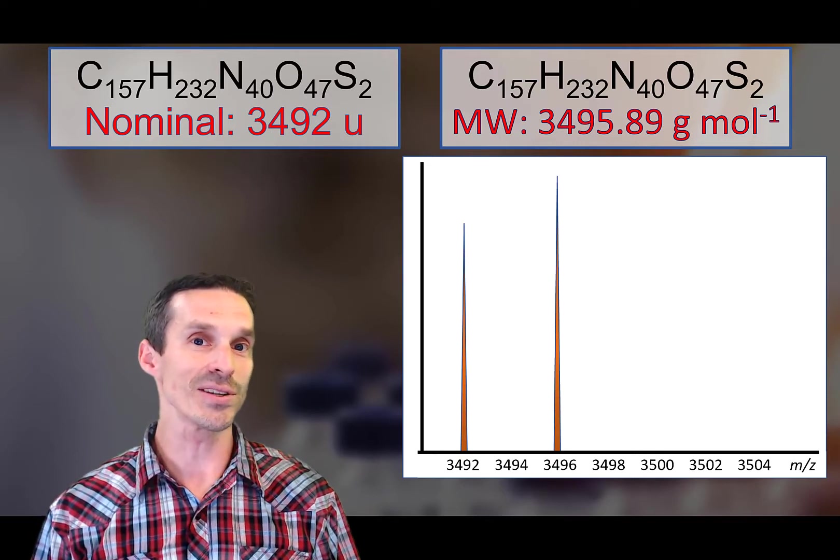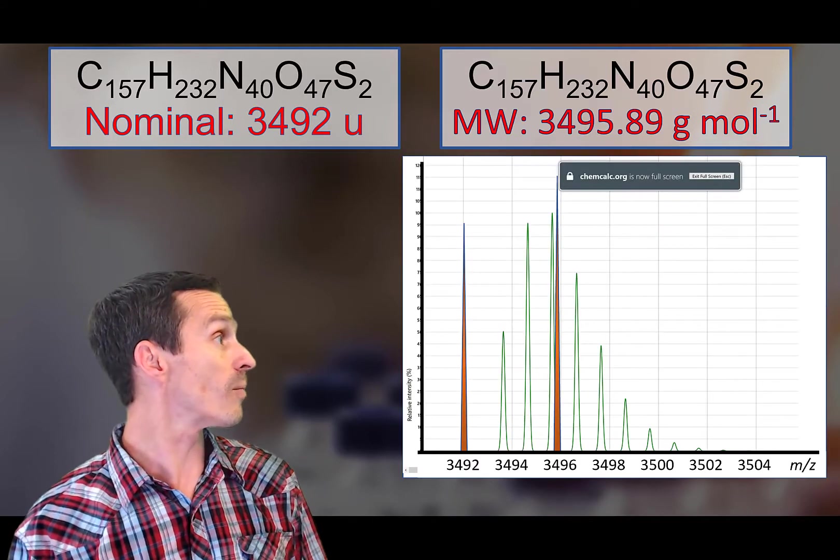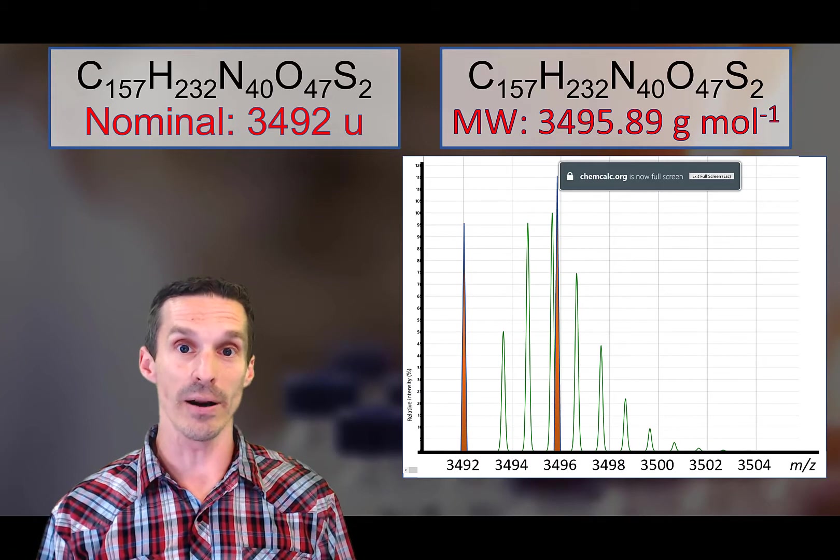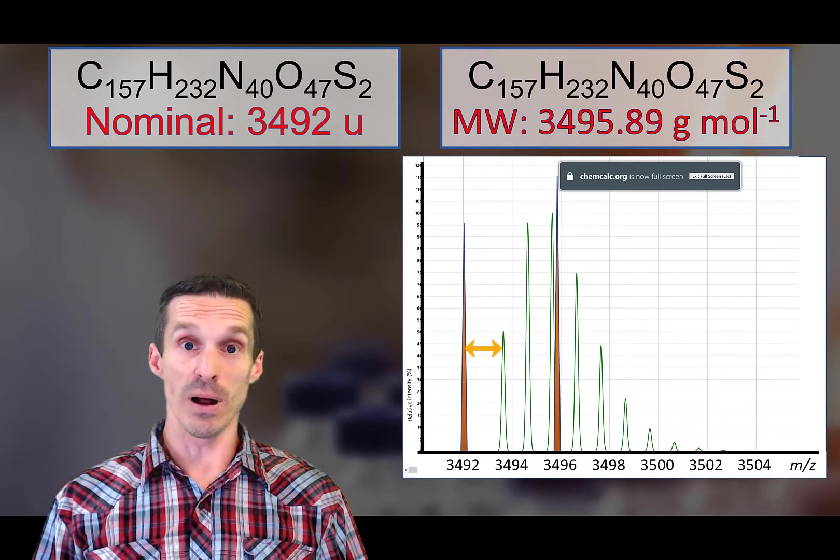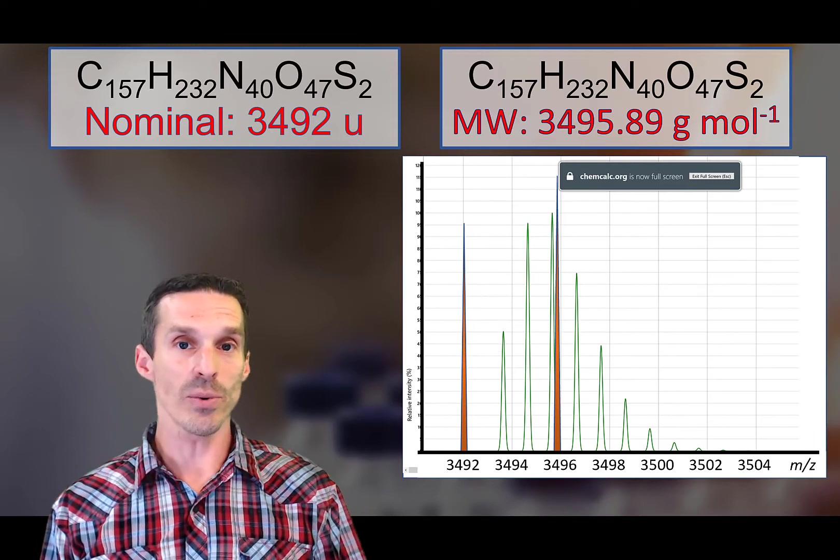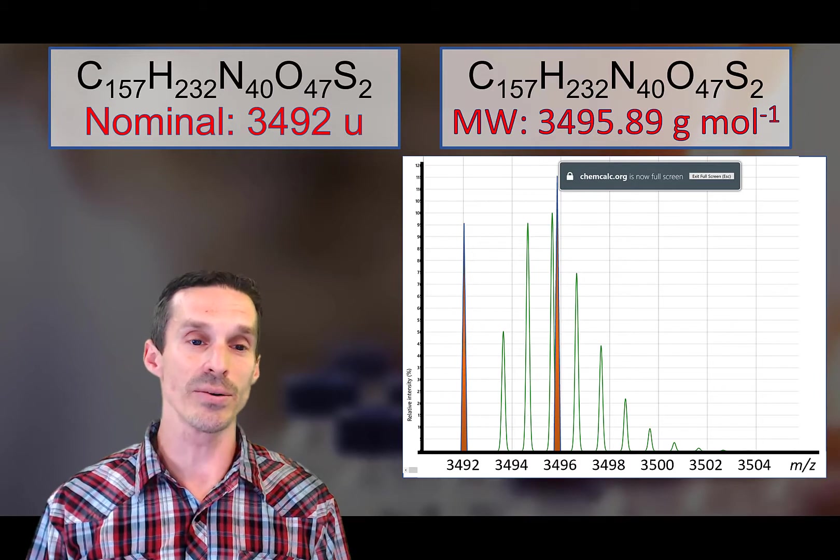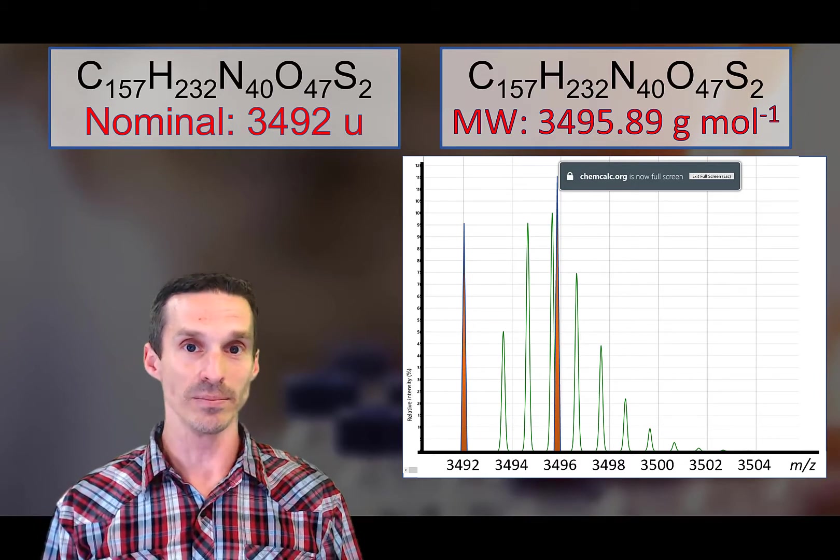But in fact they're also distinct from the real pattern that we would observe. So you remember the ChemCalc formula that we could use, well you could calculate this theoretical isotope pattern. Now the difference between the nominal mass and like the smallest mass that you see in those isotope patterns is quite large, simply because this molecule is extremely big, so all of those sort of fractions of a number they start to add up over time.